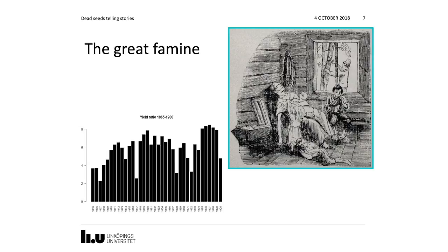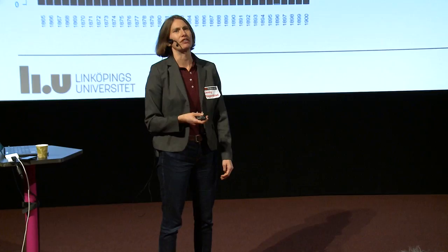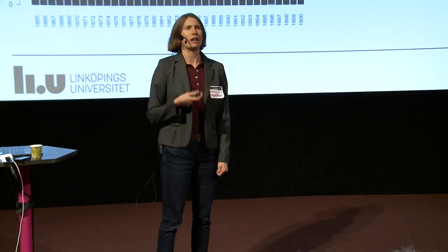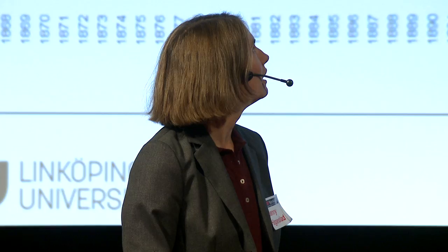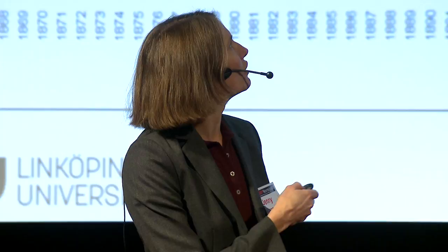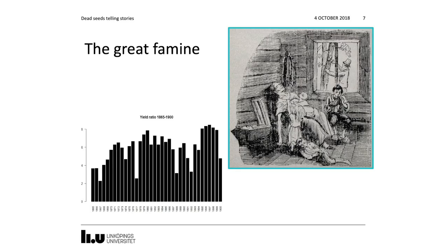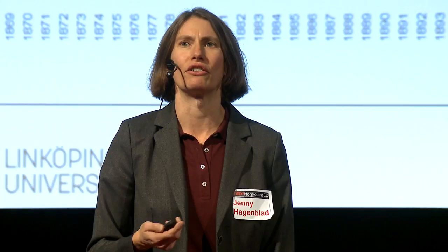This led to a great famine and many people migrated to America as a response. Another historical document shows a farmer trying to get bark from a tree to make bark bread for his family, while the son tries to eat the leather of his shoe hoping it might contain something, and the mother and younger siblings are dying from starvation.